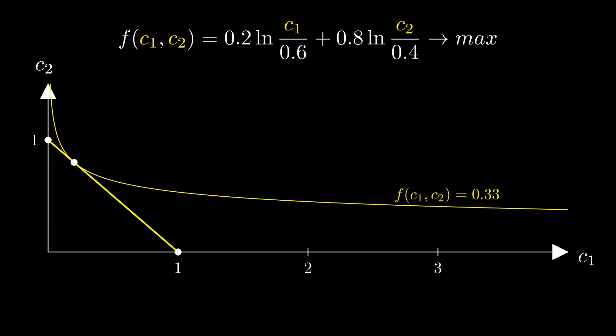If the f function has a smaller value, it's not the most optimal one, and if it's a larger value, it does not satisfy the constraint. It so happens that the solution for c1 and c2 is, in fact, p1 and p2.